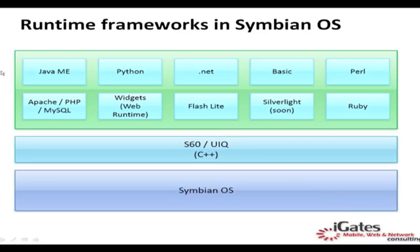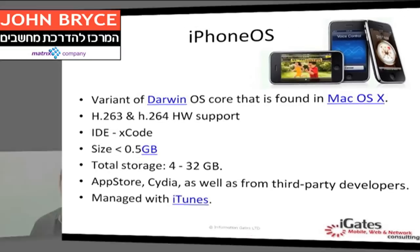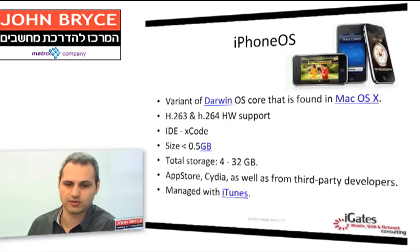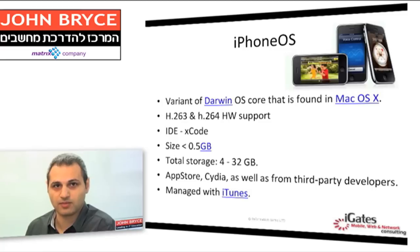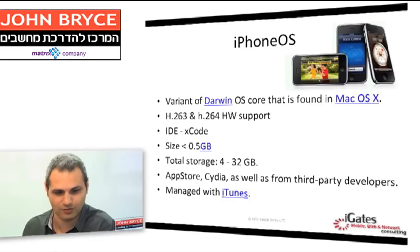iPhone OS is a variant of the Darwin OS — it can be described as a subset of the Mac OS operating system. It supplies H.263 and H.264 hardware support. The means to develop applications for iPhone OS are Xcode, and you have to have an Apple device — a MacBook, Mac Pro, or similar — in order to develop for iPhone.